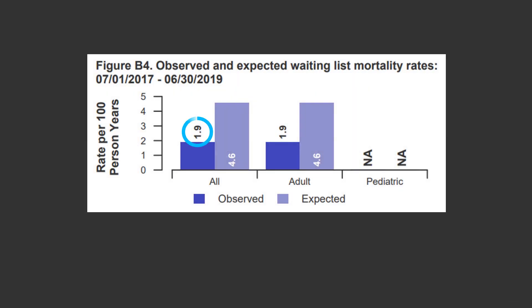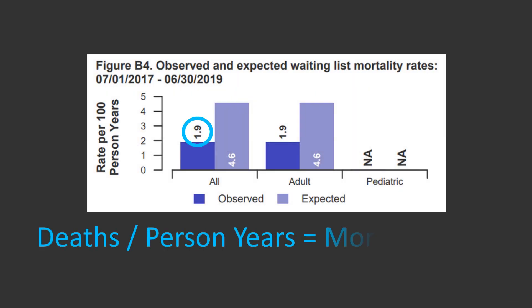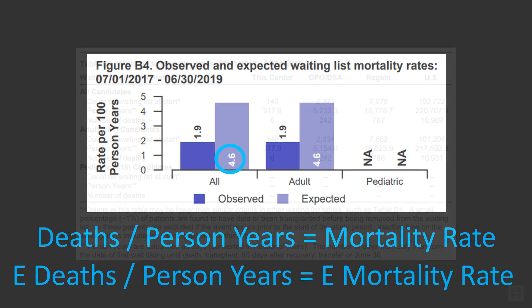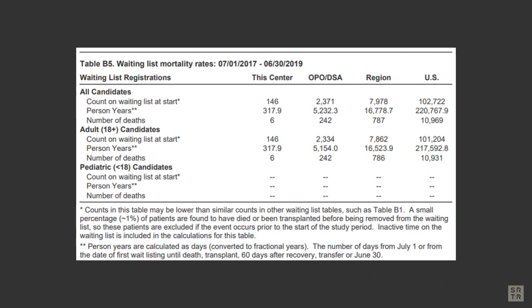The mortality rate is calculated by dividing the number of deaths by the person years. The expected mortality rate is similarly calculated by dividing the number of expected deaths by the person years. The other part of the formulas for waitlist mortality and expected waitlist mortality is the person years. Taking a closer look at Table B5, you'll see person years reported there.